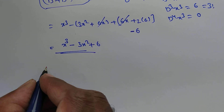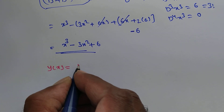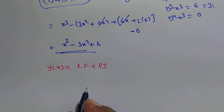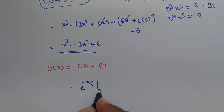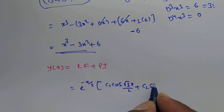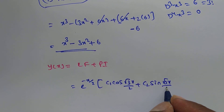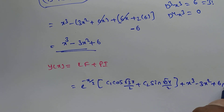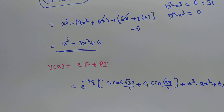The general solution is y(x) = complementary function + particular integral, which is: y(x) = e^(−x/2)·(c₁cos(√3x/2) + c₂sin(√3x/2)) + x³ − 3x² + 6. This is the general solution of f(D)·y = xᵐ form. Similarly, we can solve more problems using this method. Thank you for watching this video.